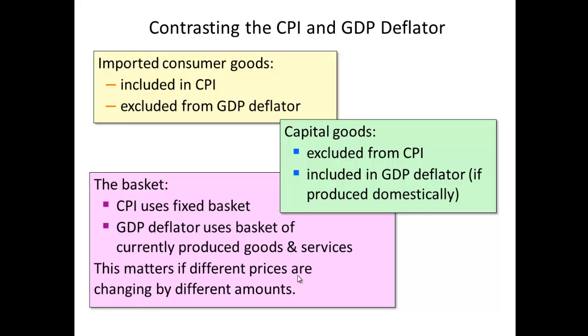With CPI, the basket is fixed and changed over time, whereas GDP covers everything produced domestically within that year. So CPI, because it uses a fixed basket, does not include new goods introduced in the current year — but GDP does. That concludes this segment of the lecture. I look forward to speaking with you in the next segment.